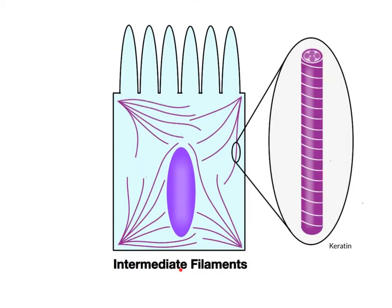The intermediate filaments have an average size diameter in between the microfilaments and microtubules. They are made of the tough protein keratin, the same protein found in hair, fingernails, and toenails. We know how strong and tough hair and nails are, so remember that connection as you study the function of the intermediate filaments. In contrast to the microfilaments, the intermediate filaments are more like thicker ropes or strong supportive cables. Their role in the cytoskeleton is to hold and anchor organelles in a specific area in the cell. The nucleus, for example, is often held in place near the central region of cells, or found as a basal nucleus near the bottom of a cell, like in the simple columnar epithelia of the GI tract.